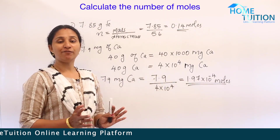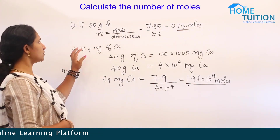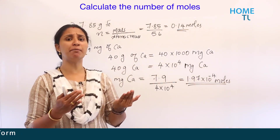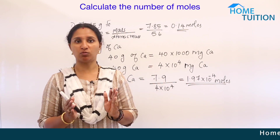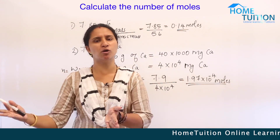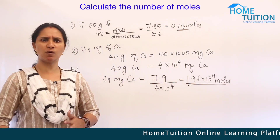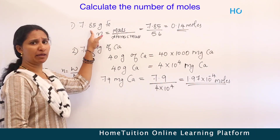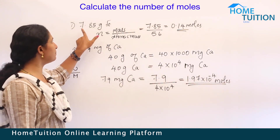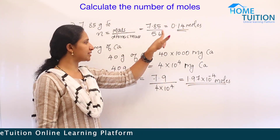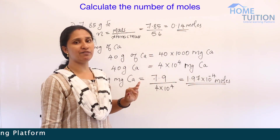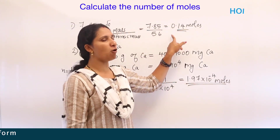Next question: find the number of moles of the following. First: 7.85 grams of iron. Number of moles equals given mass divided by atomic mass. N equals 7.85 divided by 56 (atomic mass of iron), giving 0.14 moles.